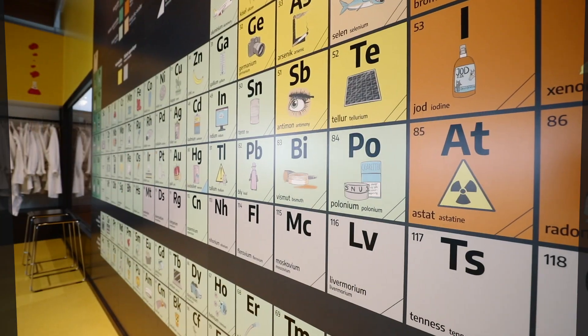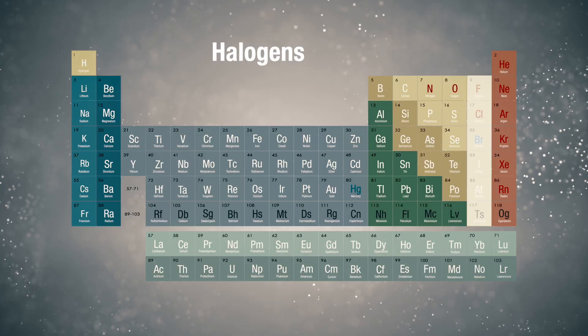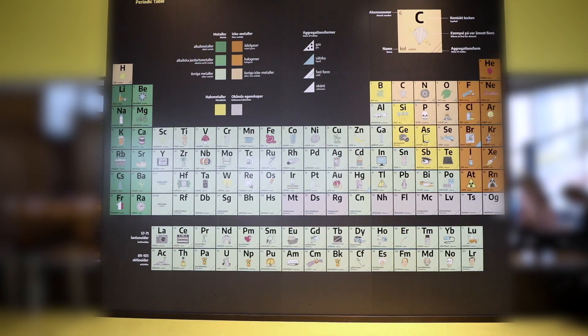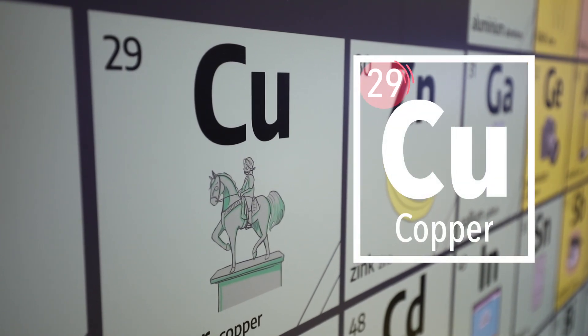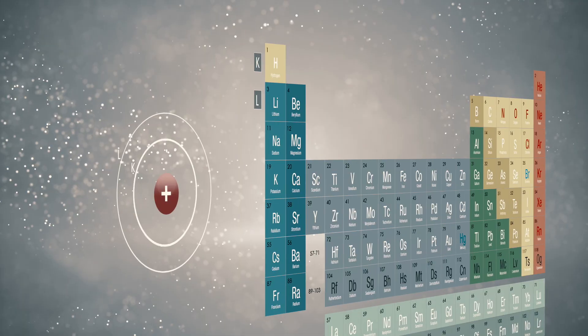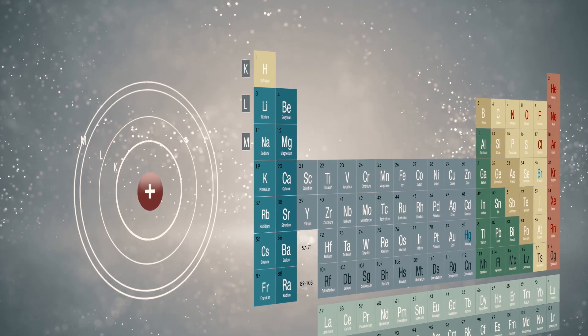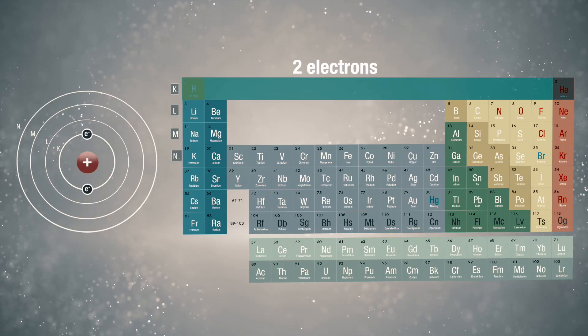The periodic table is a clever organization of all the elements organized after how they differ in structure. This is how it works. The number associated with each element is the number of protons in the core. Each row in the periodic table indicates a new electron shell.